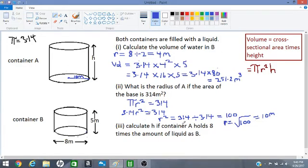Calculate h if container A holds 8 times the amount of liquid as B. So we worked out the amount of liquid that B holds and we got 251.2. So now let's find out how much liquid A holds.